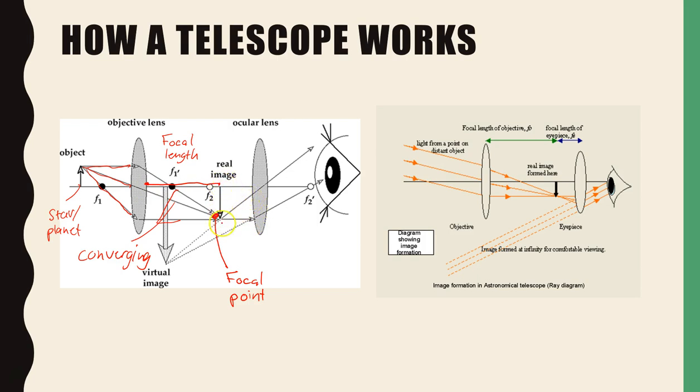Similarly, the distance from the focal point here to the beginning of the ocular lens, shown as F2, that is the focal length of the ocular lens. So that's also shown here.